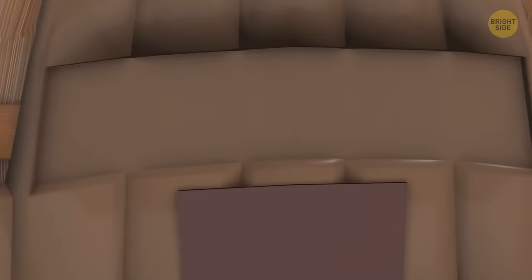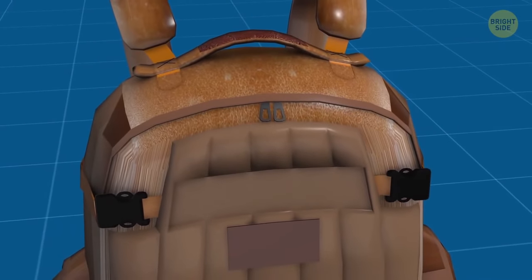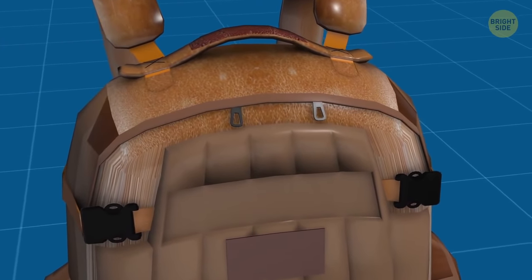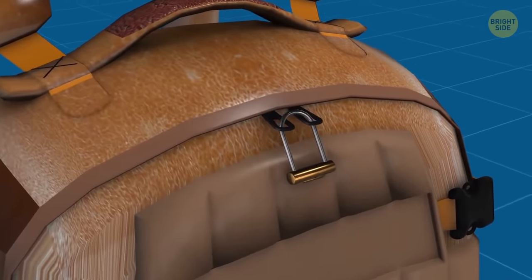Two zips for one section can be an excellent pickpocket proof. You can put on a small lock on those zippers and make sure no one but you can open your backpack.